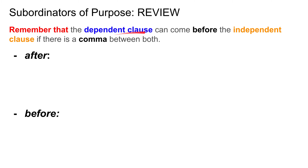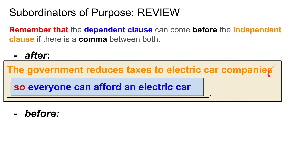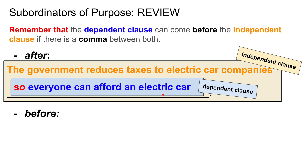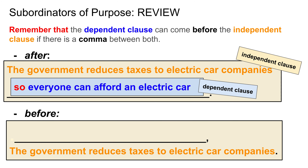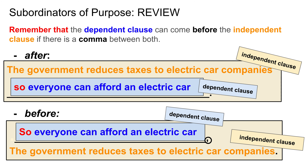Remember that the dependent clause can come before the independent clause if there is a comma between both. For example, without reordering: 'The government reduces taxes to electric car companies' — no comma — 'so everyone can afford an electric car.' That's independent clause, then dependent clause, no comma. But if we put the dependent clause first: 'So everyone can afford an electric car,' — with a comma — 'the government reduces taxes to electric car companies.' So: dependent clause, comma, independent clause.